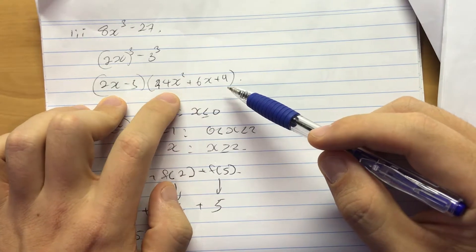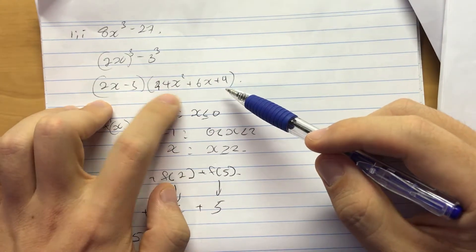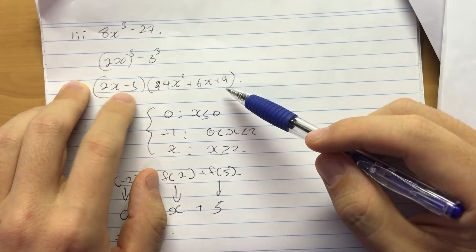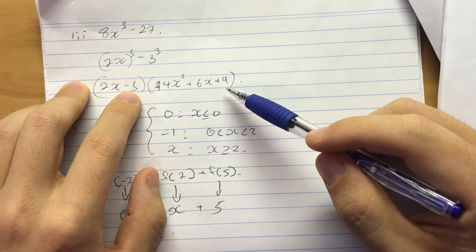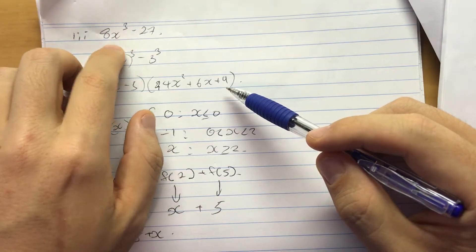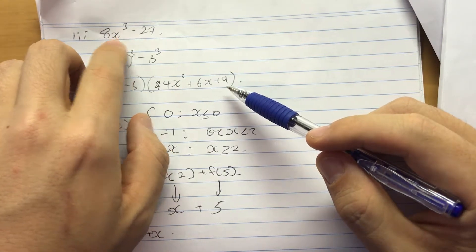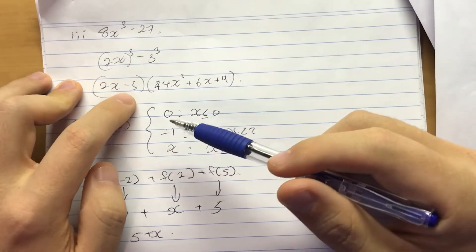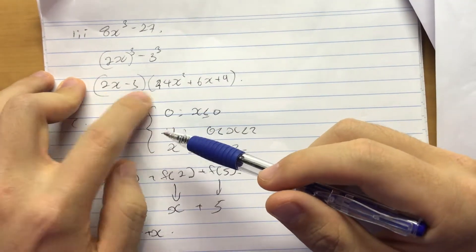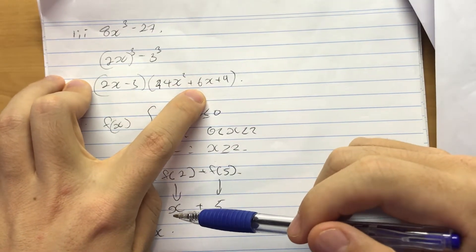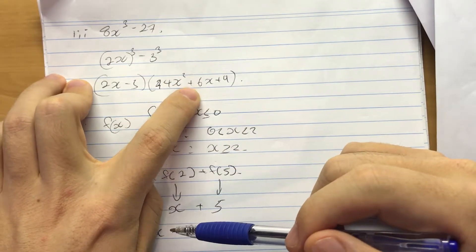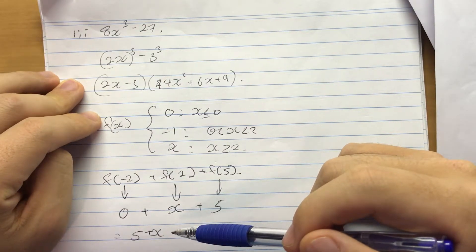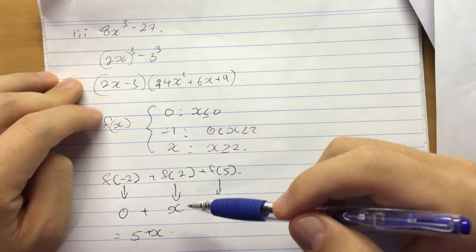Yeah, and of course you can still check something like this is right. At least check something about it. So when x is 3/2 it's meant to be equal to 0. And it is because 3/2 is what makes x³ times 8 equals 27. And another way you could check it is actually just expand this again. So it's important to make sure what you're doing is right.